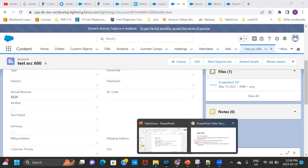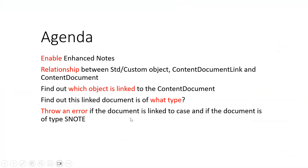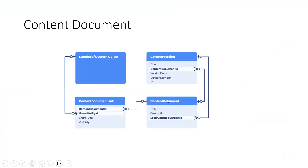Now let's go to the second agenda — the relationship between the objects and the content document. Like I told you, content document is this one. Any file or notes that you attach gets saved as a content document in the back end. How it gets linked to the standard or custom object is through content document link. The link entity ID field on content document link is nothing but the ID of the standard or custom object, and content document ID is the ID of the content document. You can call it a junction object between standard custom object and the content document.